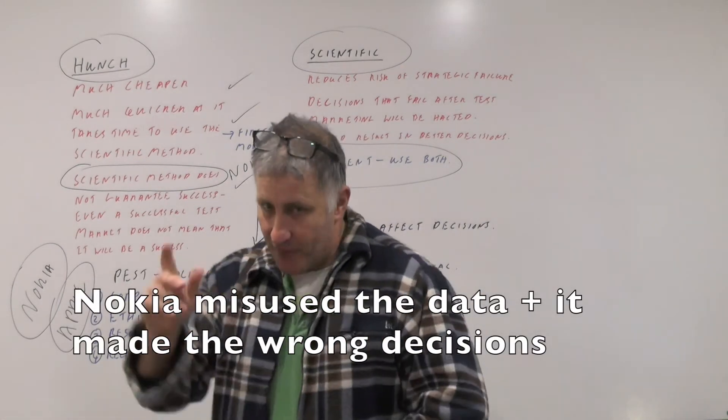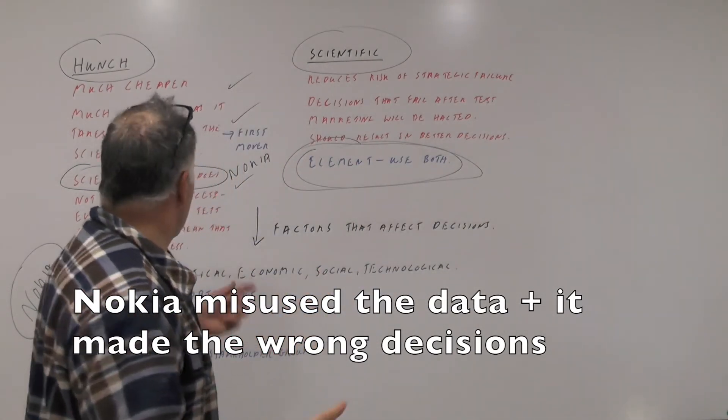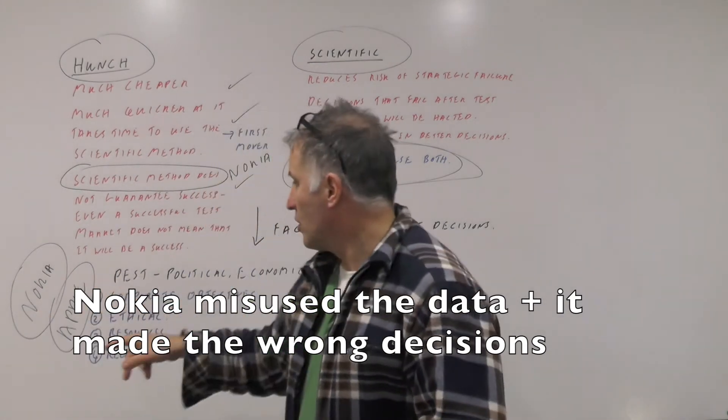Now in reality therefore, let's go back to this point: a firm may use both, so it may be both scientific and a hunch. So far we've got two examples: Nokia and Apple.